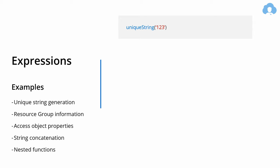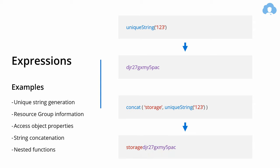If you pass a parameter like '123' to the uniqueString function, it will return a random string. You can then use uniqueString as part of a concatenation function to ensure that you create some sort of naming convention for your storage accounts, while still giving a unique part to the name to ensure deployment won't fail due to name collision. There are dozens of functions you can combine to create any kind of ARM template to fit your business needs.